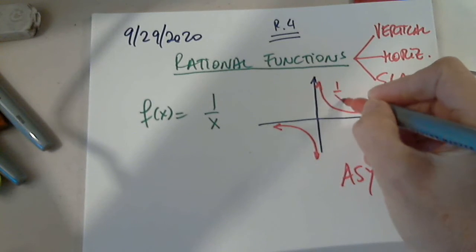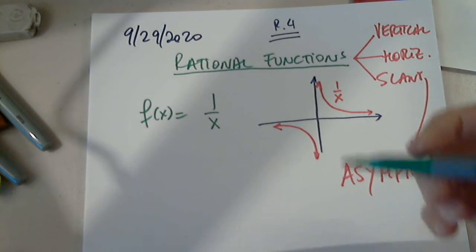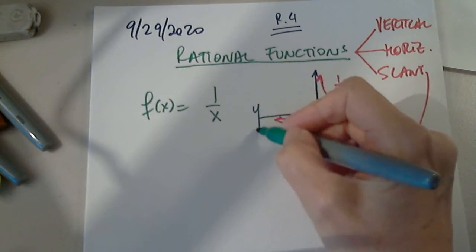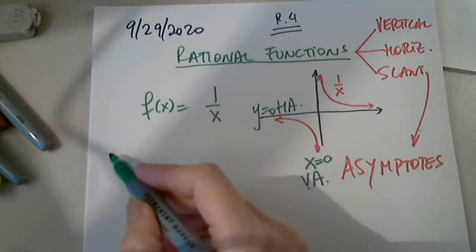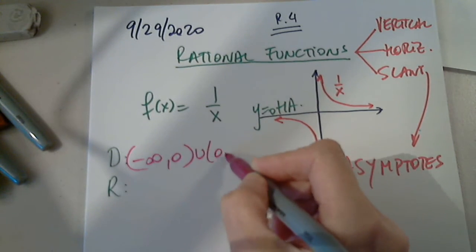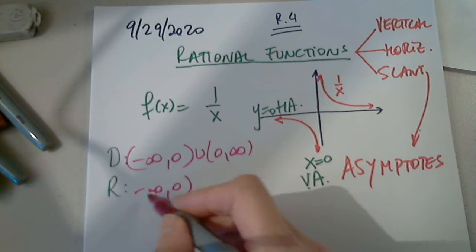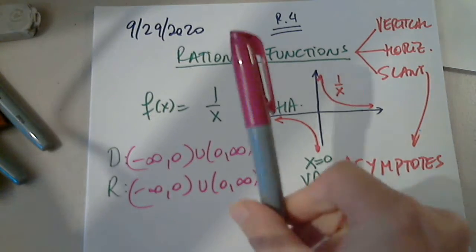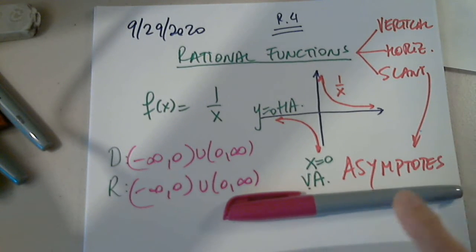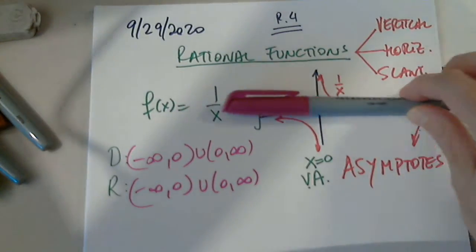So this is the graph of 1 over x. You notice that x equals 0 is a vertical asymptote, and y equals 0 is a horizontal asymptote. Can anyone give us the domain and range? The domain is negative infinity to 0, union 0 to infinity. The range is also negative infinity to 0, union 0 to infinity. If I sweep the graph from left to right, the graph doesn't exist at 0, and similarly it does not exist at y equals 0.